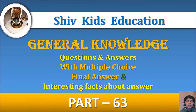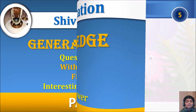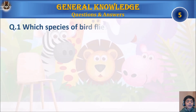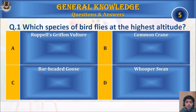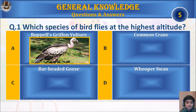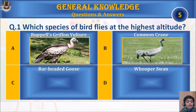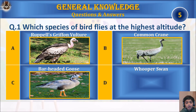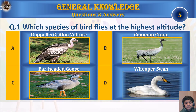Question 1: Which species of bird flies at the highest altitude? A) Rüppell's griffon vulture, B) common crane, C) bar-headed goose, or D) whooper swan? Your time starts.